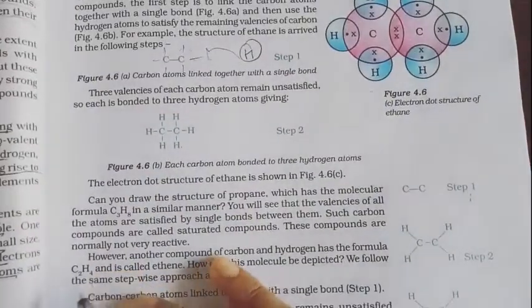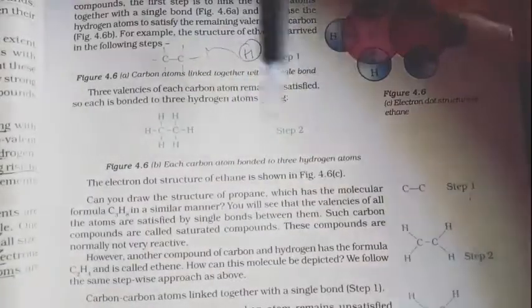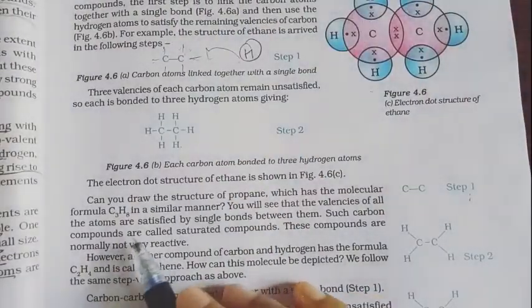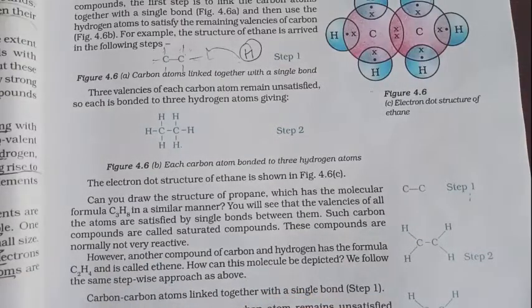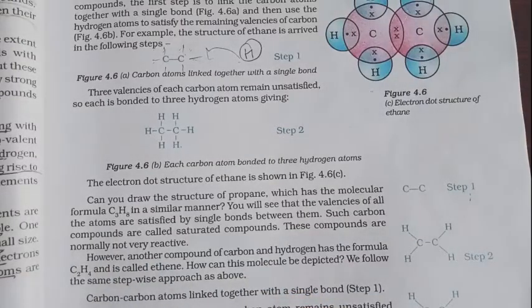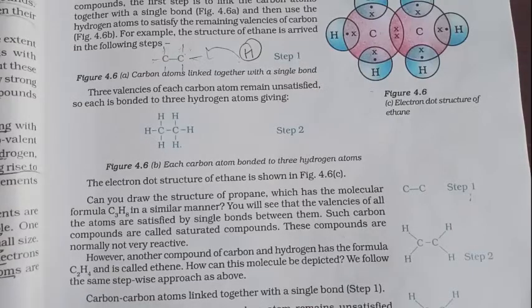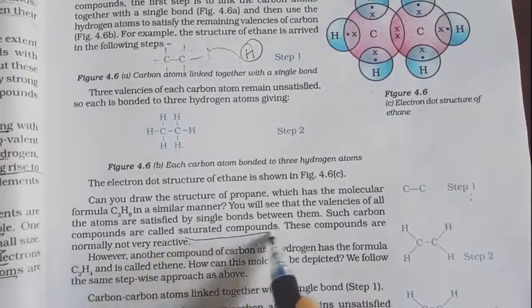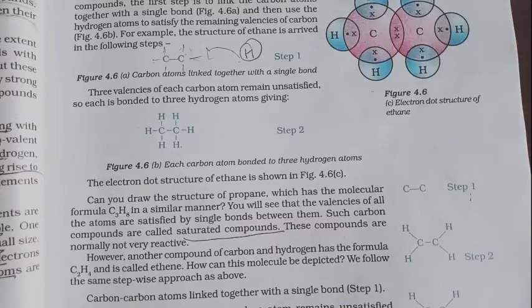We can draw the structure. We will see that the valences of all the atoms are satisfied by single bonds between them. Such carbon compounds are called saturated compounds. These compounds are normally not very reactive.